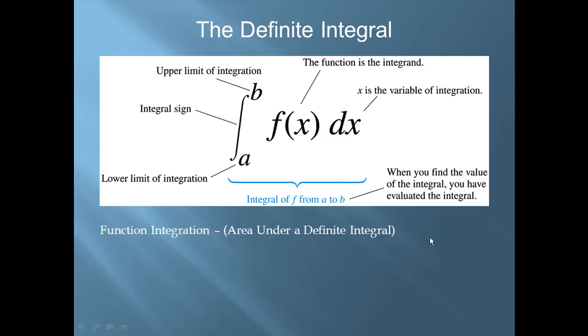Function integration is defined by the area under the definite integral. The TI-89 function is the integrate function and it contains the parameters: the expression, which is your integrand f of x, the variable, which is your variable of integration, your lower limit a, and your upper limit of integration b.